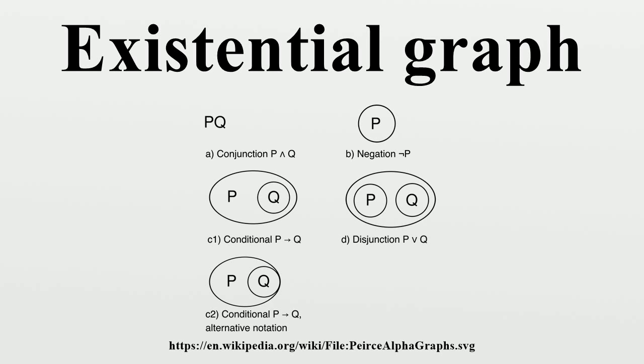Model theorists consider Peirce the first of their kind. He also extended De Morgan's relation algebra. He stopped short of meta-logic,